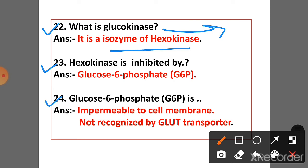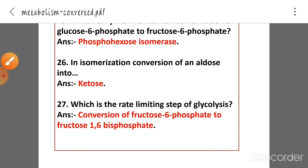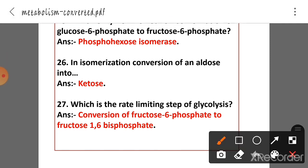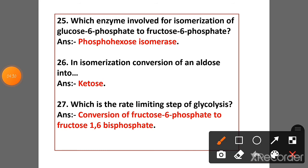Question 24: Glucose-6-phosphate is impermeable to the cell membrane and is not recognized by the GLUT transporter. Question 25: Which enzyme is involved in the isomerization of glucose-6-phosphate to fructose-6-phosphate? Answer: Phosphoglucose isomerase.